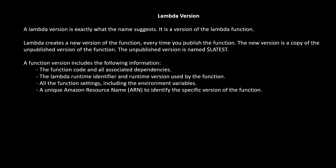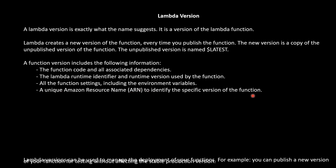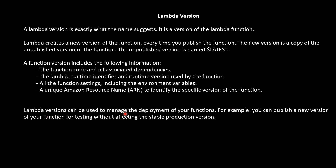A function version includes the following information: the function code and all associated dependencies, the Lambda runtime identifier and runtime version used by the function, all the function settings including the environment variables, and a unique Amazon Resource Name to identify the specific version of the function. Lambda versions can be used to manage the deployment of your functions. For example, you can publish a new version of your function for testing without affecting the stable production version.